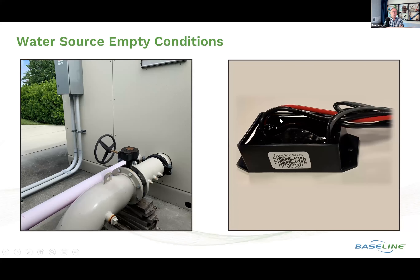Another water source empty condition can be based on an event switch using the BL-5402 event bicoder. Large pump stations — like this one capable of 1,800 GPM — often have their own control systems with indicator lights or switches. The BL-5402 event bicoder can read a third-party switch condition and allow it to influence the Baseline system, so we can connect an external indicator to control whether a water source is considered active or not.